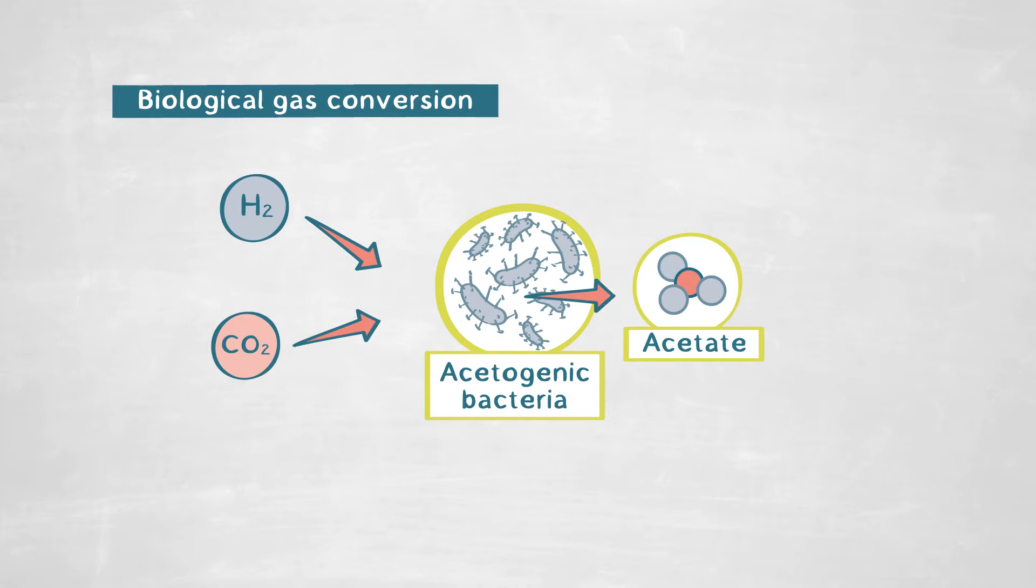The idea of the conversion process is to feed these bacteria with the gases. The bacteria will consume the H2 and CO2 which is in the waste gases, the greenhouse effect gas CO2, and then will produce acetate.